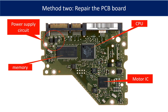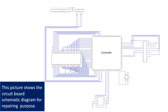This picture shows the basic components and their functions on the PCB board. You may use this picture as a reference to fix the PCB board. The most vulnerable parts on the PCB board are the power supply circuit and motor IC. This picture shows the PCB board schematic diagram for repairing purposes.